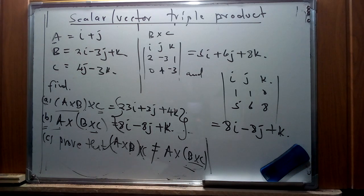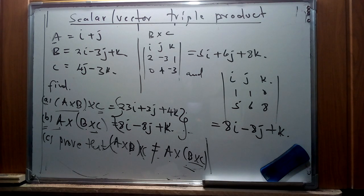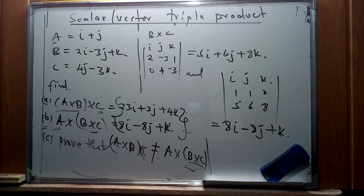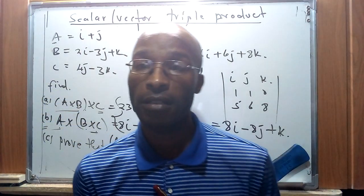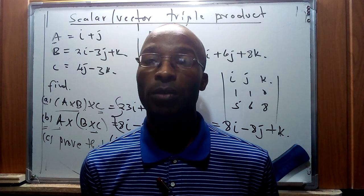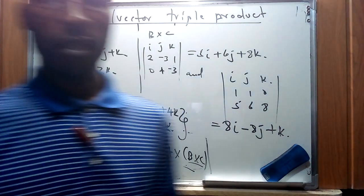This is a proof that (a × b) × c is not equivalent to a × (b × c). From this we can see the difference between the scalar triple product and the vector triple product as demonstrated using this example. One of the applications, as we said, is finding the volume of a parallelepiped, and other applications are in physics and engineering for finding forces, moments, and other quantities resulting from interaction of multiple objects. That is all for today — thank you, God bless!